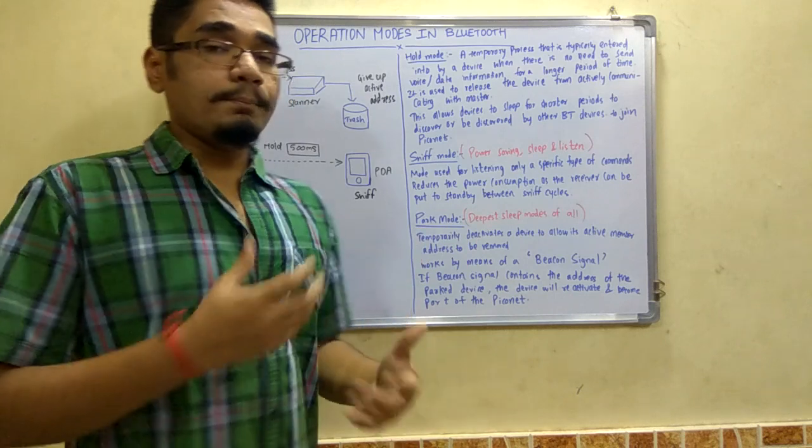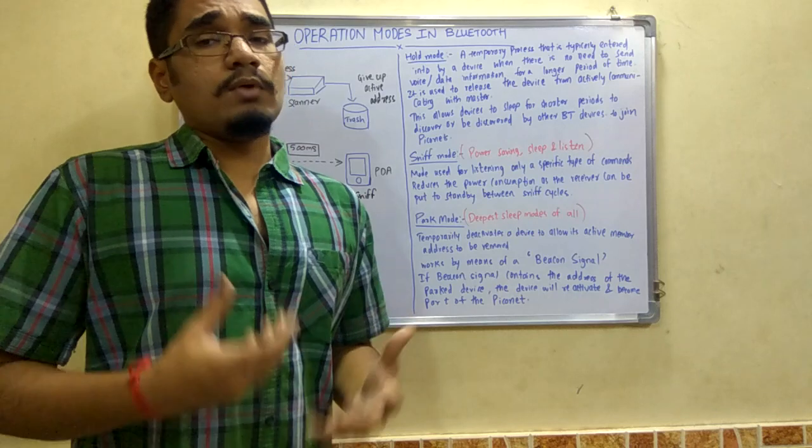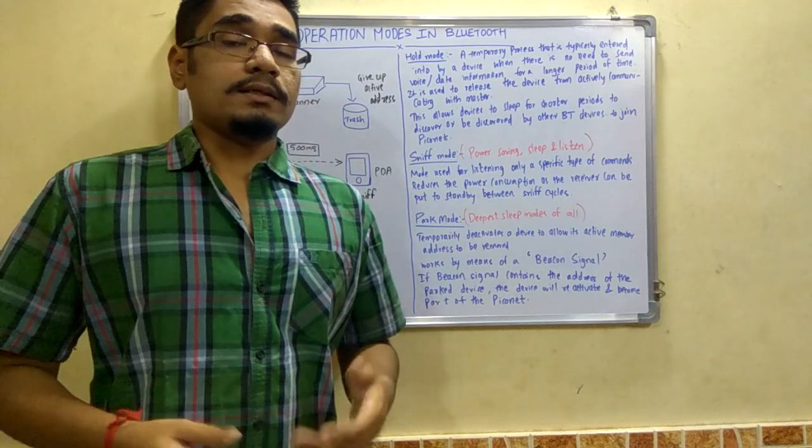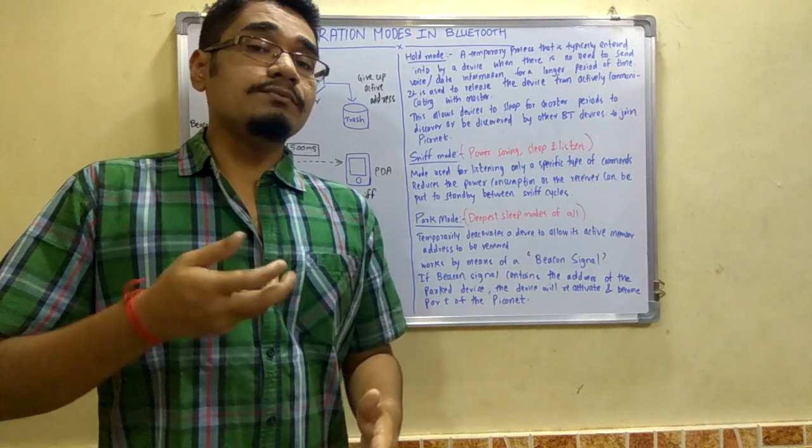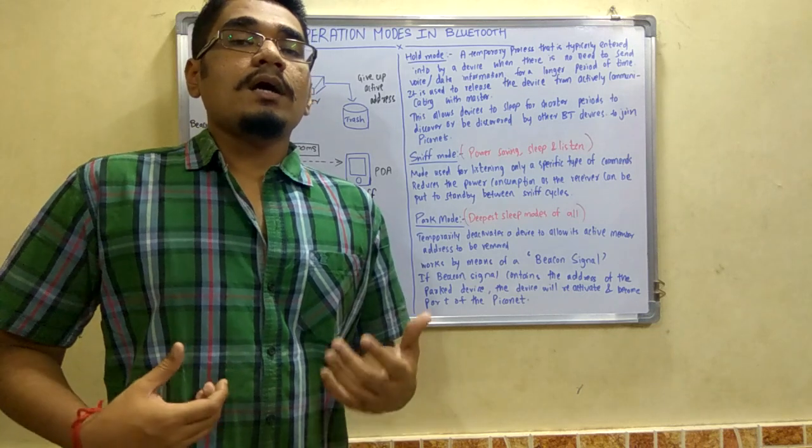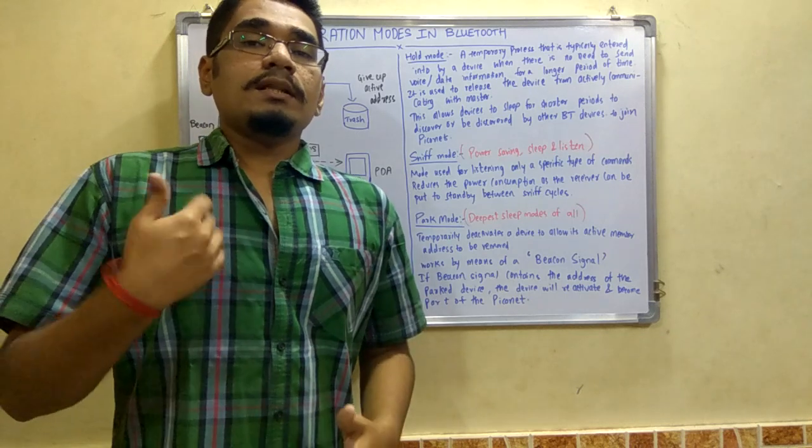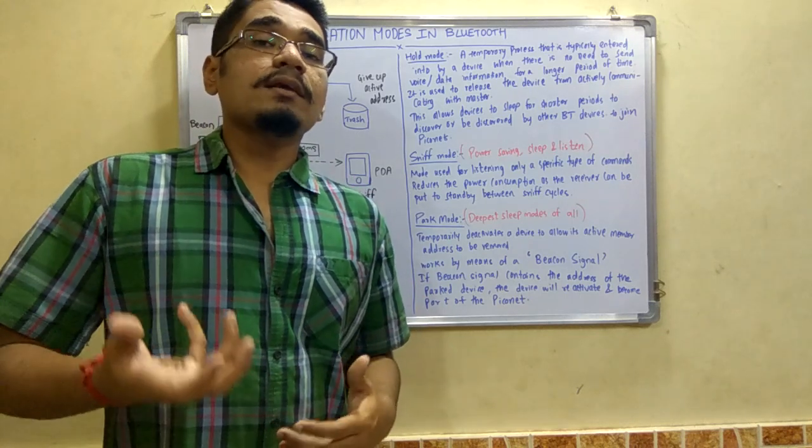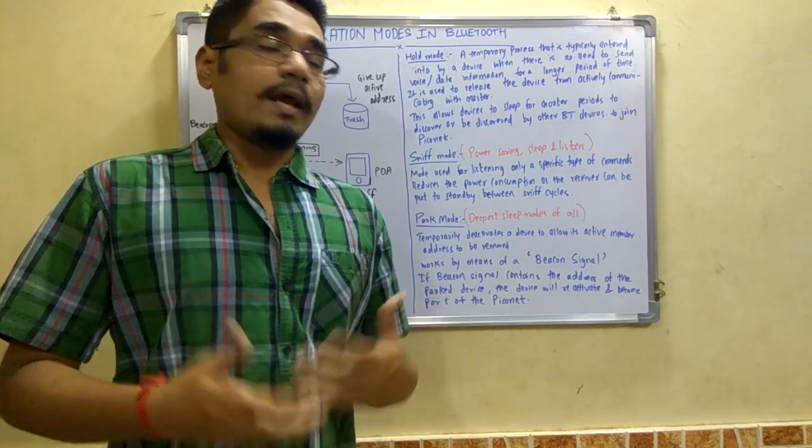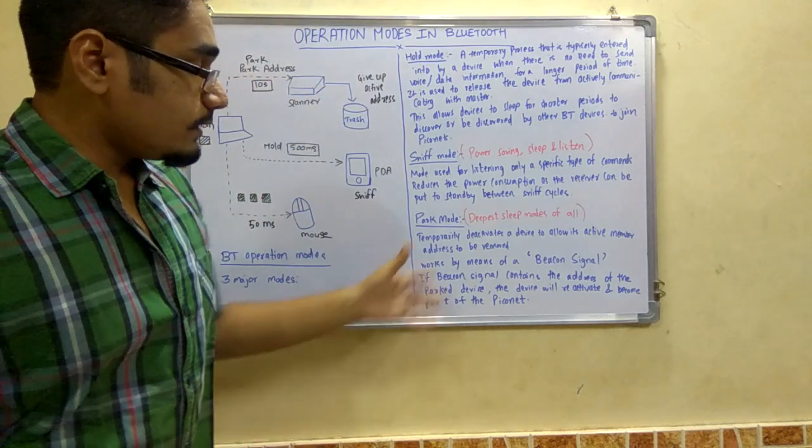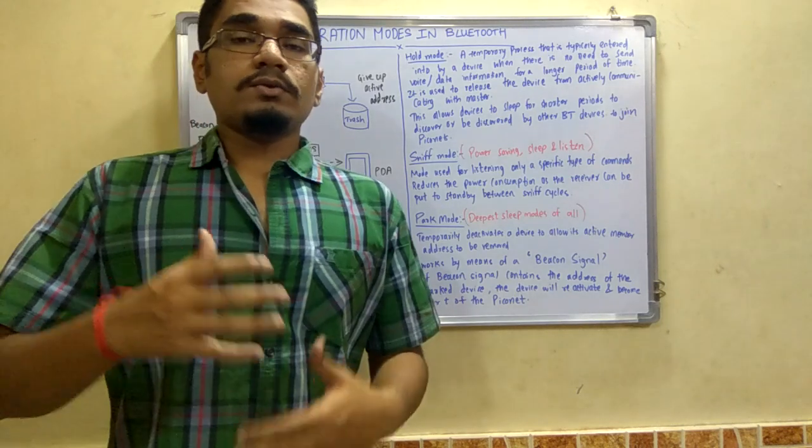If the beacon signal contains the address of the park device, the device will reactivate and become part of the piconet. In park mode, we mainly communicate by means of a beacon signal. This beacon signal contains a park address assigned to those devices which it wishes to communicate. Whenever a master sends a beacon signal to its slave device, the slave device will identify whether its active address is there or not and function accordingly. This is the device that will reactivate and become part of the piconet.